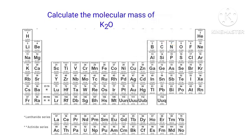In K2O molecule there are two potassium atoms and one oxygen atom present. So the molecular mass of K2O is 39.098 into 2 plus 15.999, that is equal to 94.195 gram per mole.